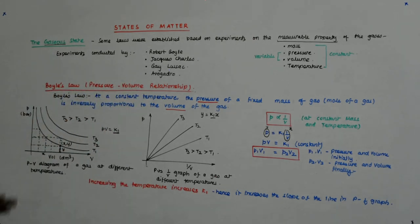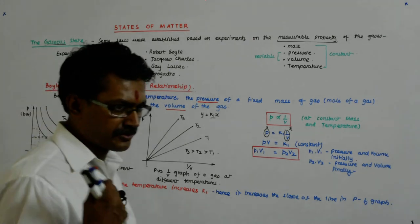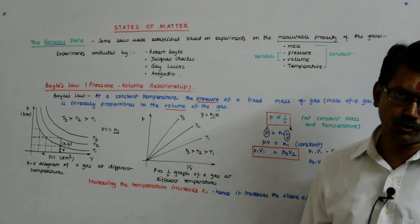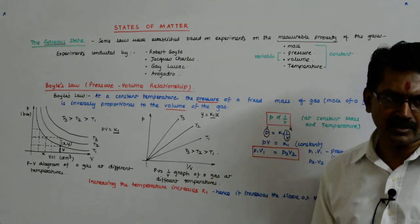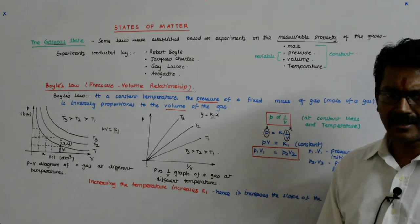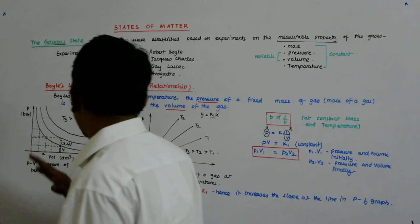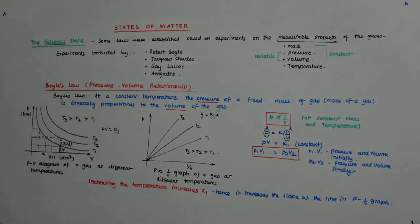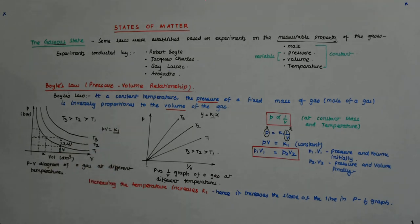In the p versus v graph, you cannot easily talk about slope because it is a curve — the slope is variable and depends on which point you're at. In the p versus 1/v graph, the slope is constant throughout the straight line, so it is much more convenient to talk about slope there.